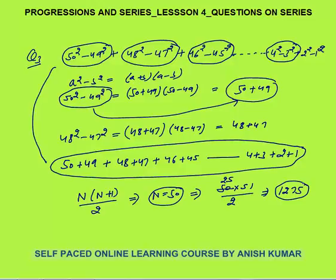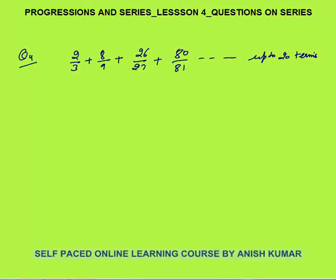Question 4: 2/3 plus 8/9 plus 26/27 plus 80/81 up to 20 terms. These questions are based on AP, GP, or common sense — all of which we have covered. Notice that 2/3 can be written as 1 minus 1/3. By practice you will be able to spot such patterns to form an AP or GP.